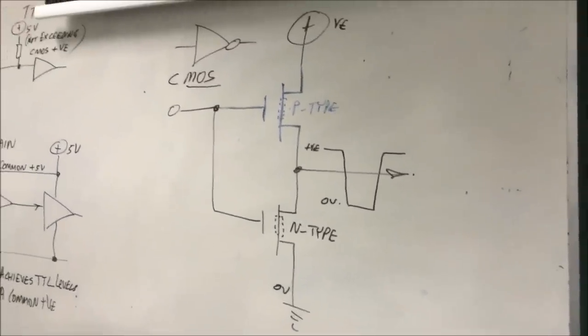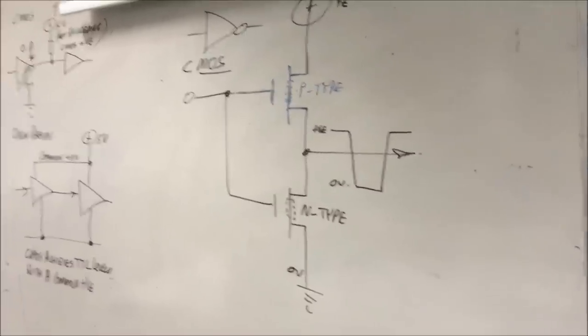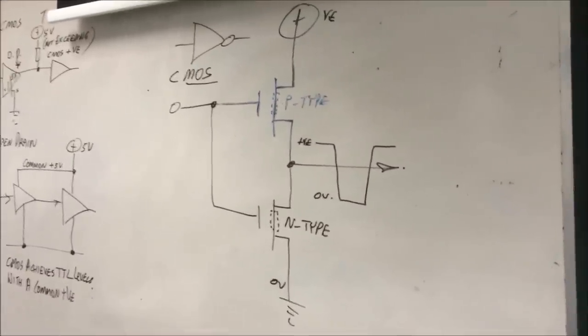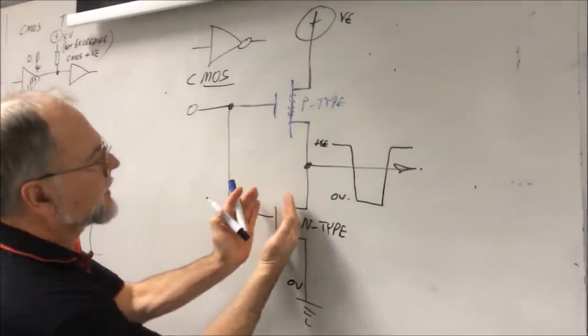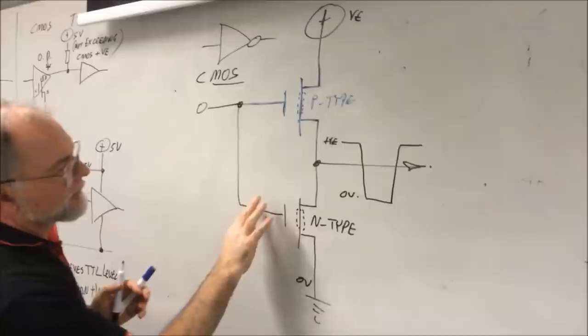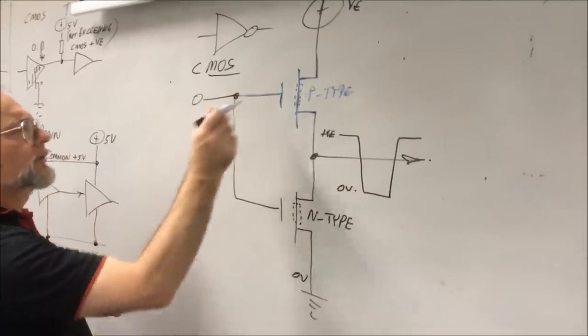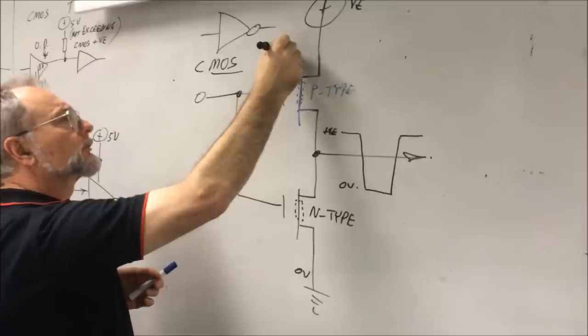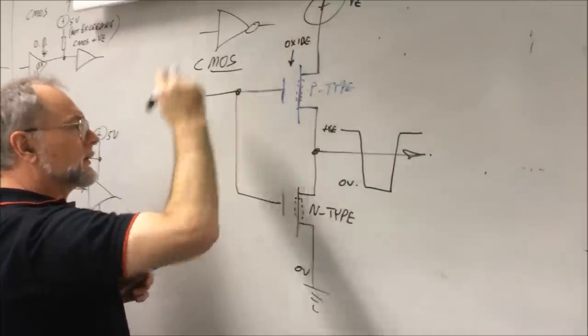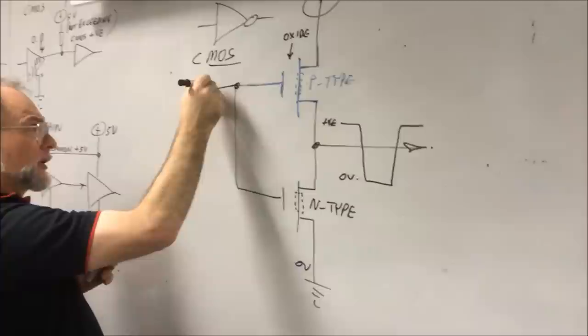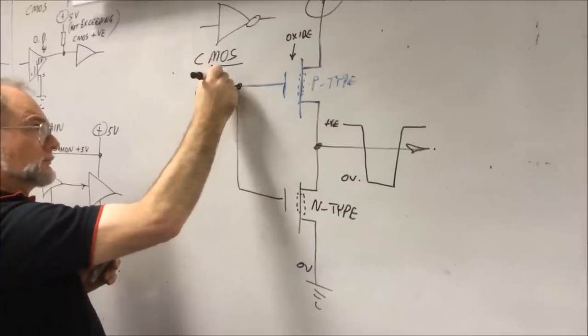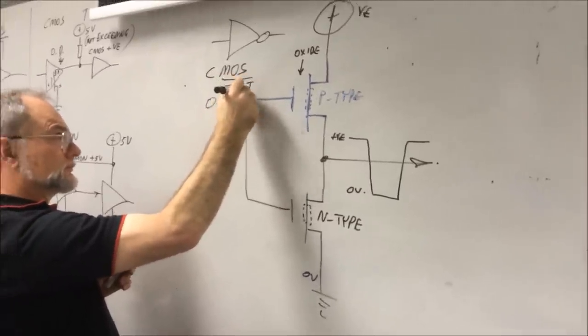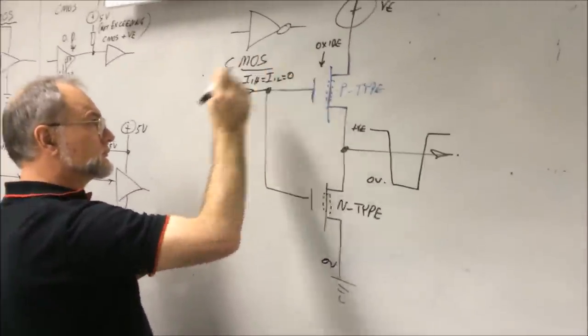The other one has a little bit of a capacitive action going on too. You can see the two plates of the capacitor there. So in theory because they're both insulated by the oxide layer, there can be no current. Now the oxide is there just to prevent DC long term.